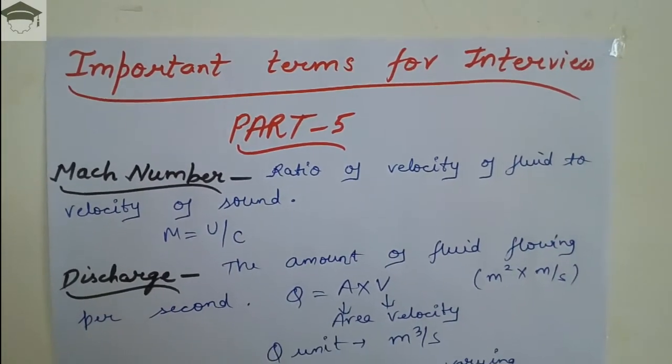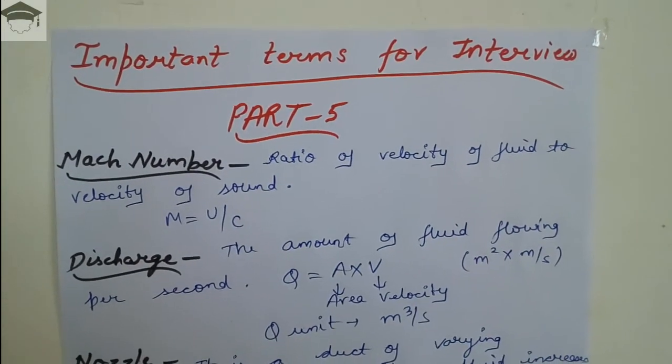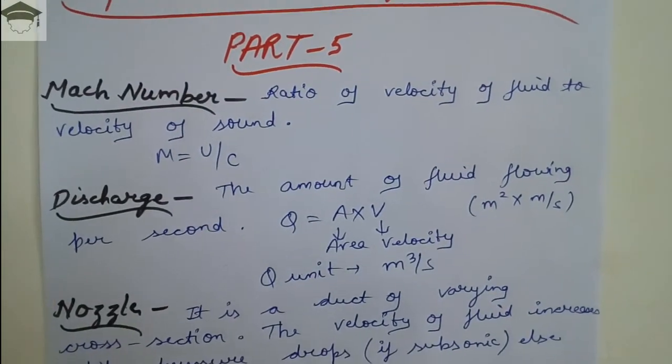Mach number: ratio of velocity of fluid to the velocity of sound. M = U/C. This is known as Mach number.